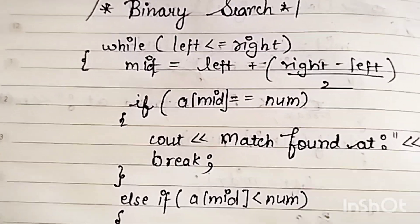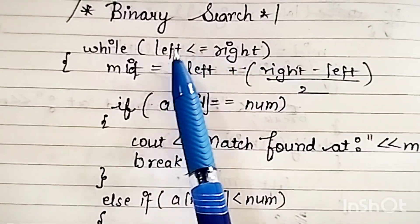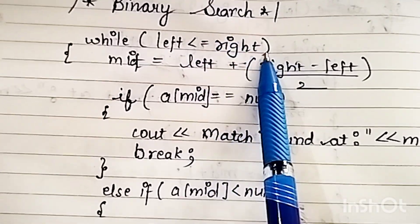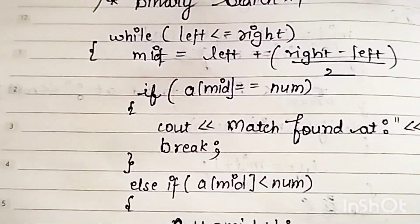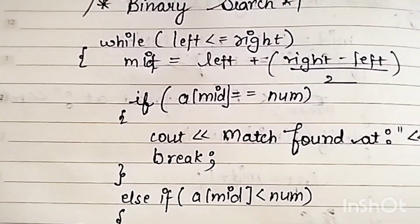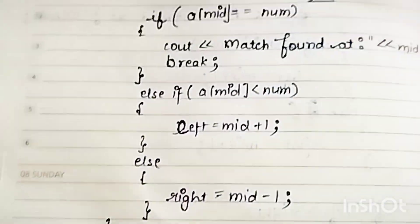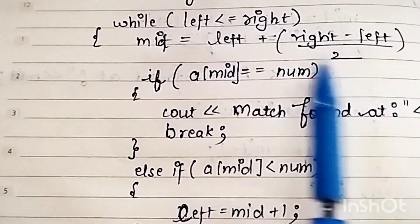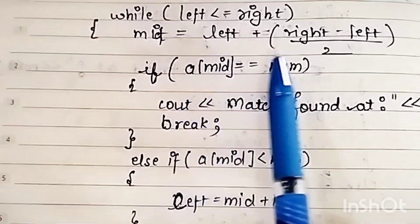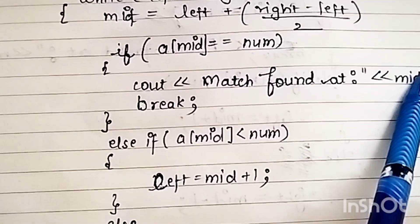Then we start the while loop. The while loop runs when the left position is less than or equal to the right position. If left becomes greater than right, our logic has failed and we exit the loop. Inside the loop we calculate mid, then put an if condition: if the element at the middle-most position matches our target, we print 'match found at' that position.